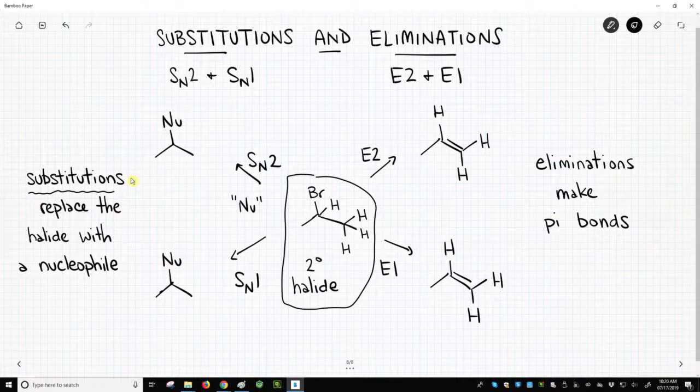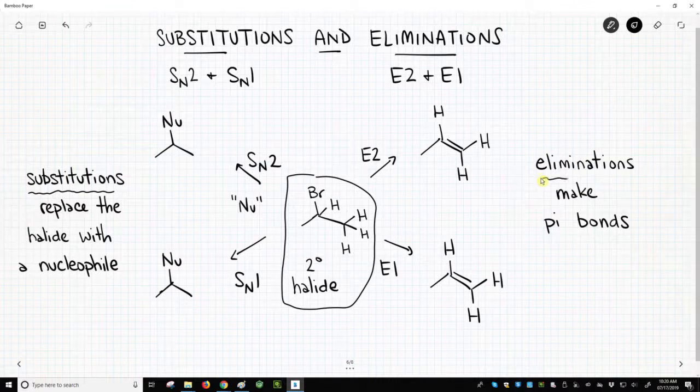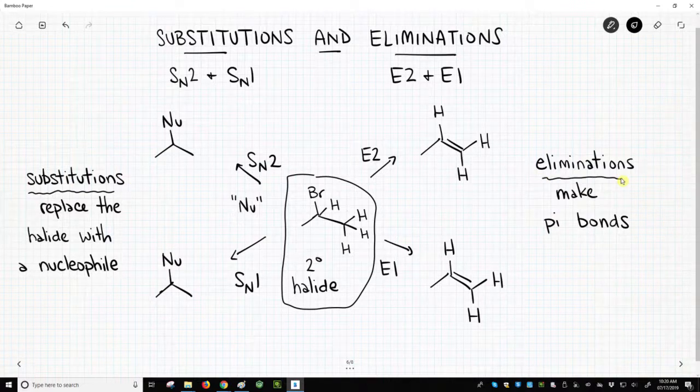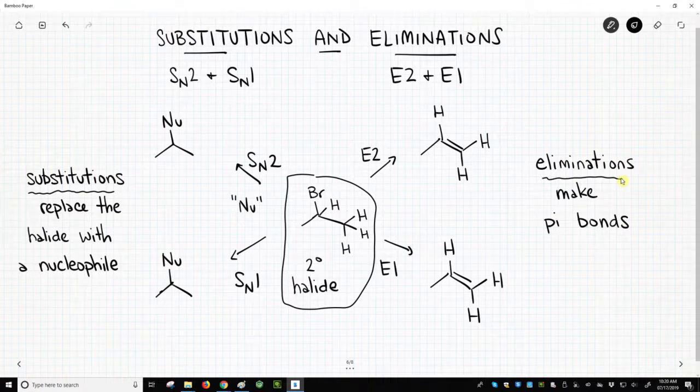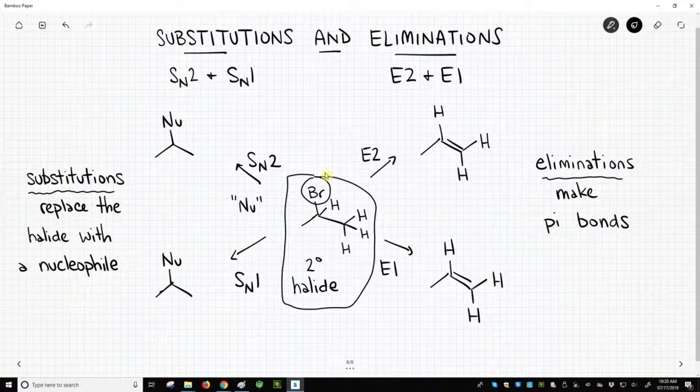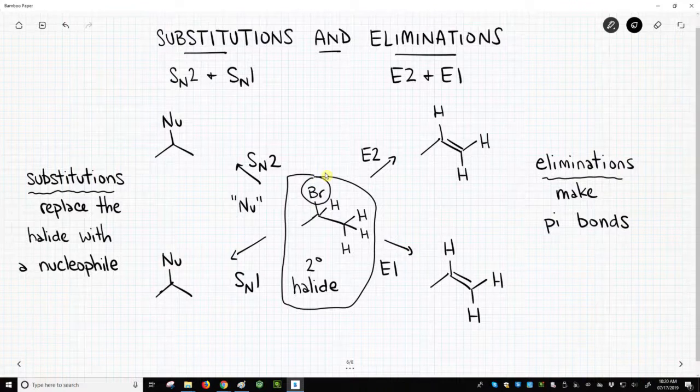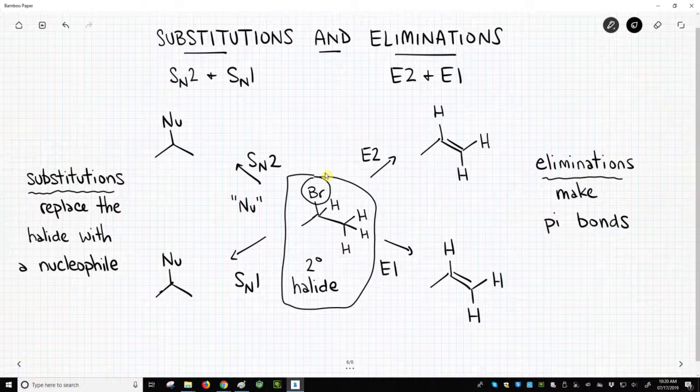On the right-hand side of the screen, we have the elimination reactions. Eliminations make pi bonds. In these eliminations, we created a new carbon-carbon pi bond, and that happened in part through loss of the bromine. So in all these reactions, we're losing the bromine. We're losing the halide. And that's why we refer to the halide as our leaving group in these reactions.